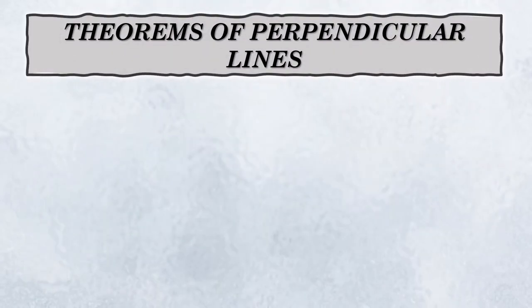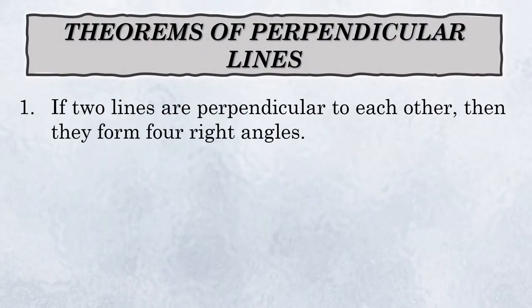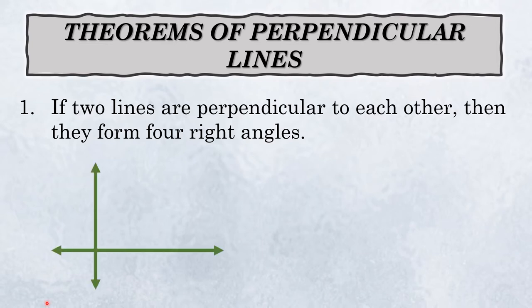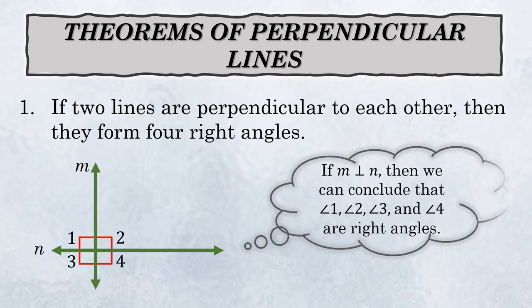There are three theorems on perpendicular lines. The first theorem: if two lines are perpendicular to each other, then they form four right angles. For example, if we have perpendicular lines M and N, the intersection forms angles one, two, three, and four — all right angles.